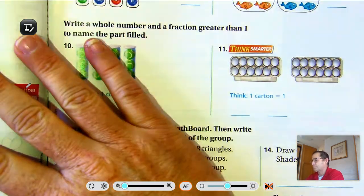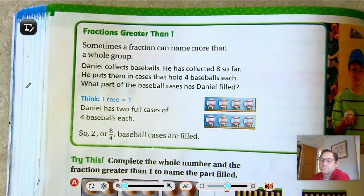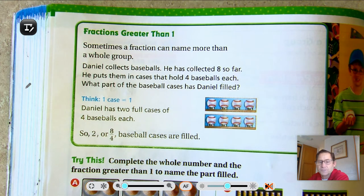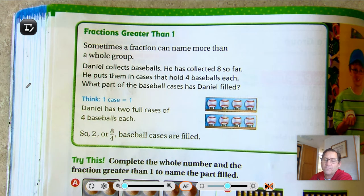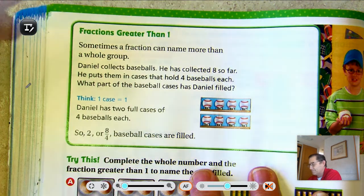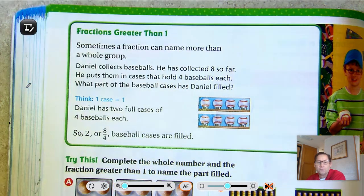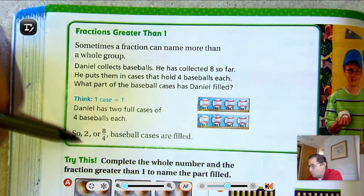Page 348: Fractions greater than 1. Sometimes a fraction can name more than a whole group. Daniel collects baseballs. He has collected 8 so far, and puts them in cases that hold 4 baseballs each. What part of the baseball cases has Daniel filled? We want to think that 1 case equals 1 whole. He has 2 full cases of 4, so he has 2 whole cases.